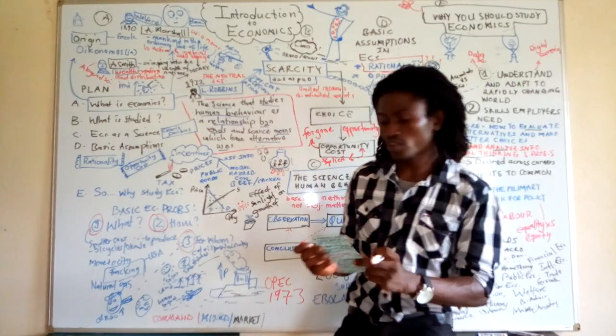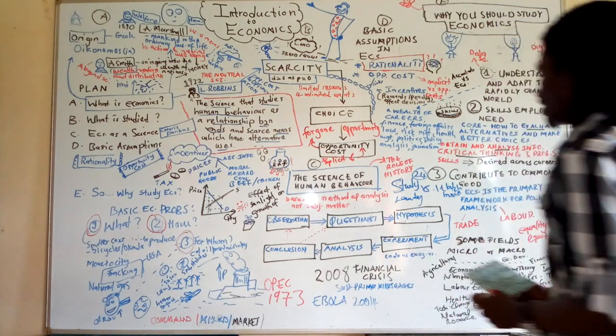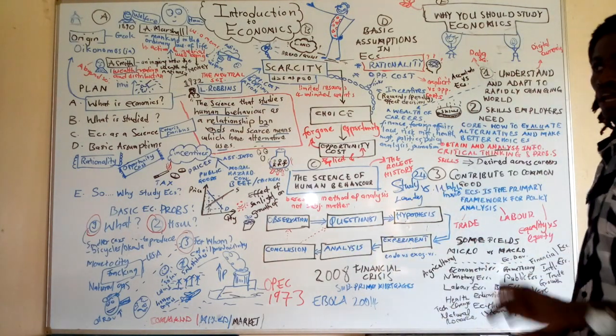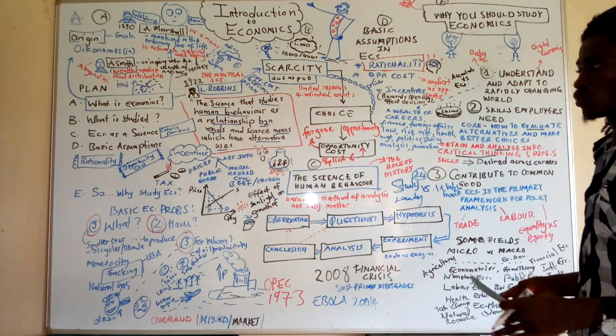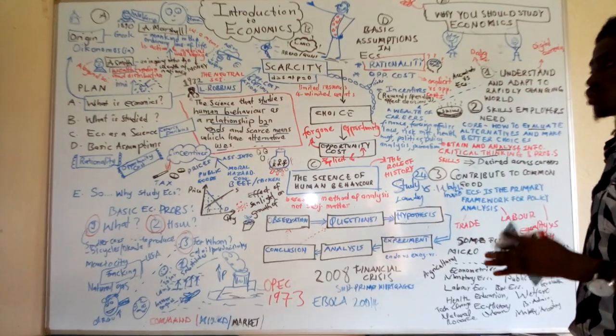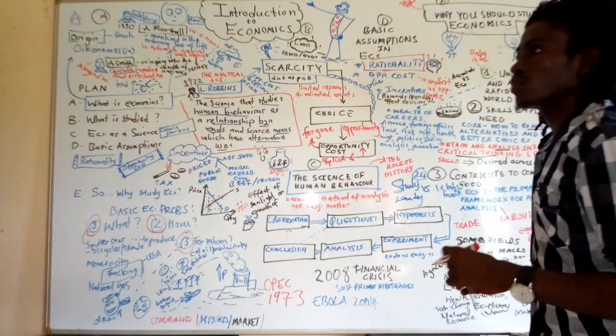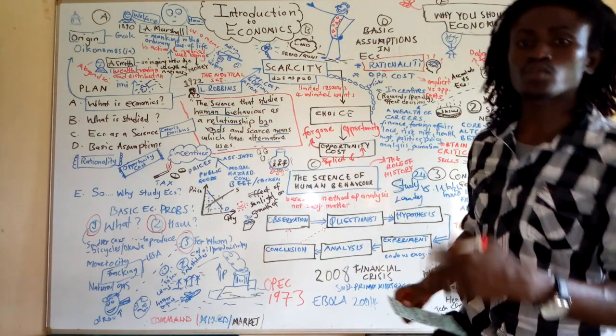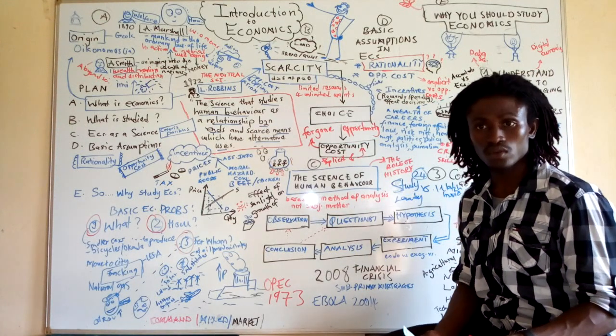We continue our discussion on marginal decision making. The student does not choose to study 24 hours and do nothing else - that's not what we see people do. It's often a question of should I spend the next hour studying, or should I spend the next hour going to watch a movie, watch a football match, or chatting with friends.